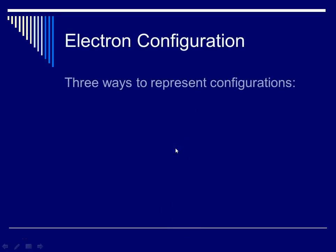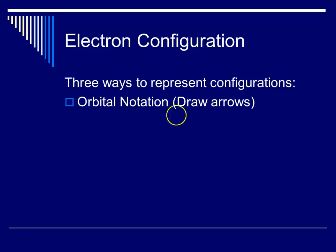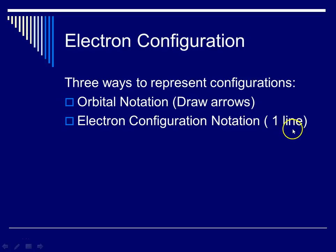When we're doing electron configurations, we have three ways that we represent our electron configurations. We have the orbital notation, and that's where you draw out your 1s, 2s, and actually draw in your arrows.